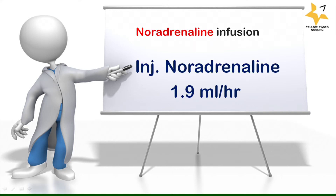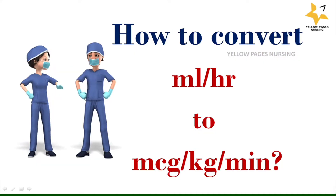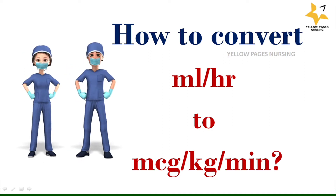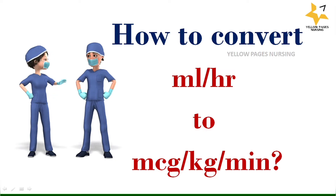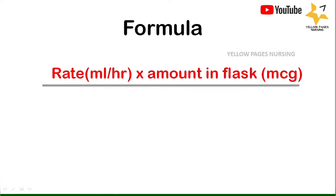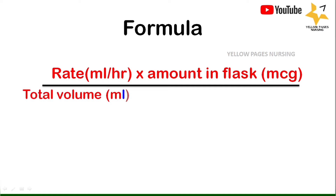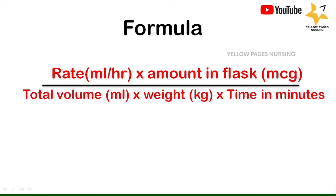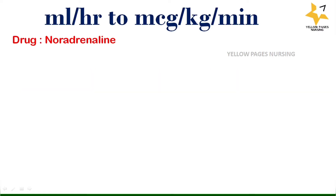The first example is injection noradrenaline 1.9 ml per hour using a syringe pump — how to convert ml per hour to microgram per kg per minute. The formula is: rate (ml per hour) multiplied by amount in flask converted to microgram, divided by total volume, multiplied by weight, multiplied by time in minutes, which gives micrograms per kg per minute.